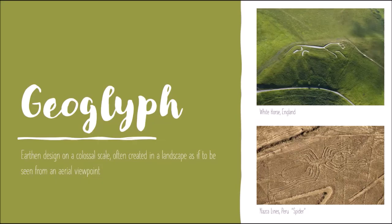The next vocabulary word — a lot of people's favorite word — geoglyphs. These are earthen designs on colossal scales, often created in a landscape as if to be seen from an aerial viewpoint. Our examples here are the white horse that we can find in England, or the very famous Nazca Lines in Peru, and our example here is of the spider.